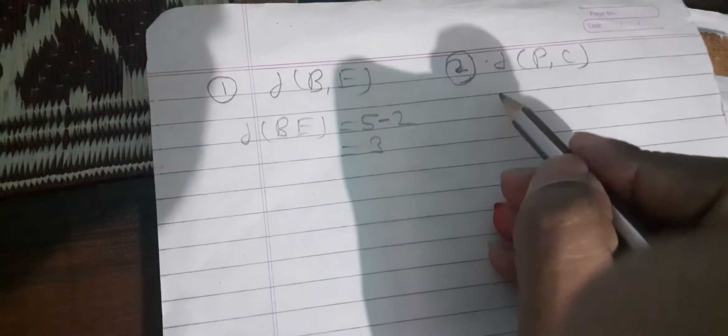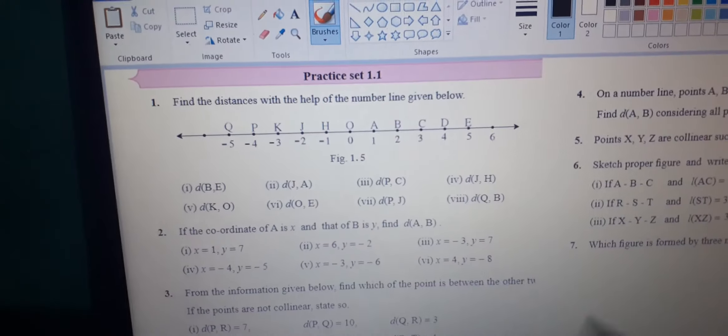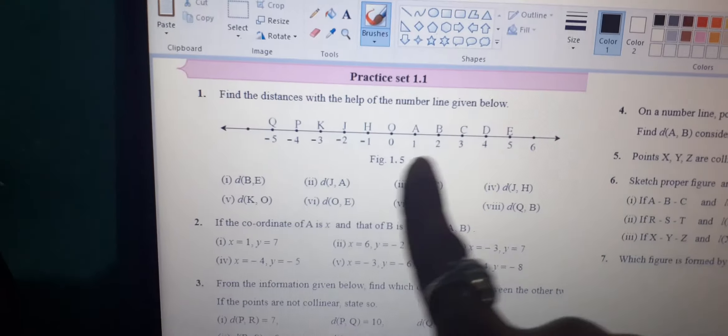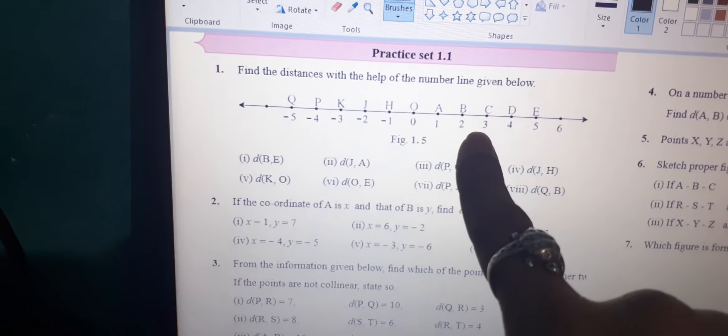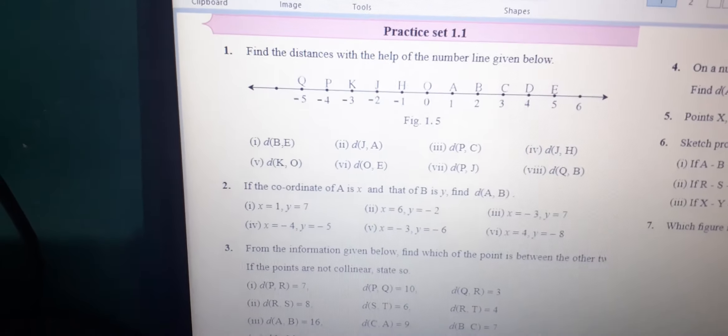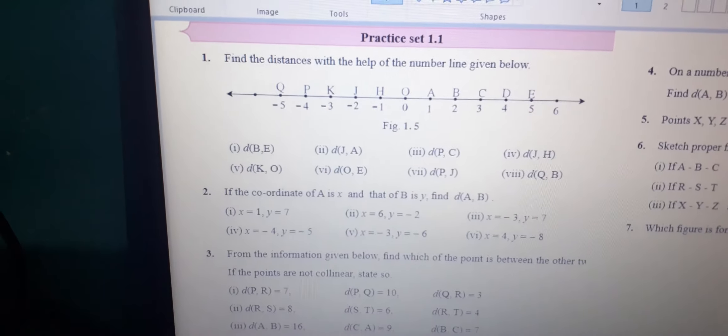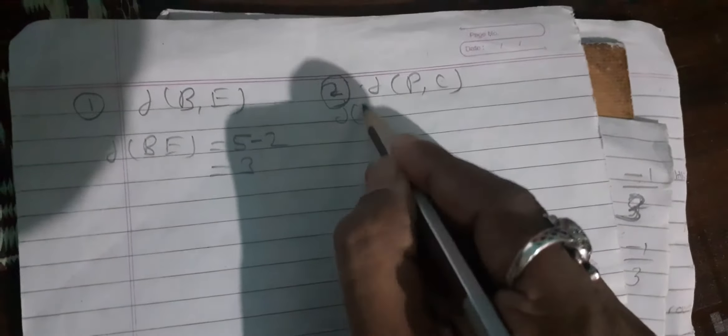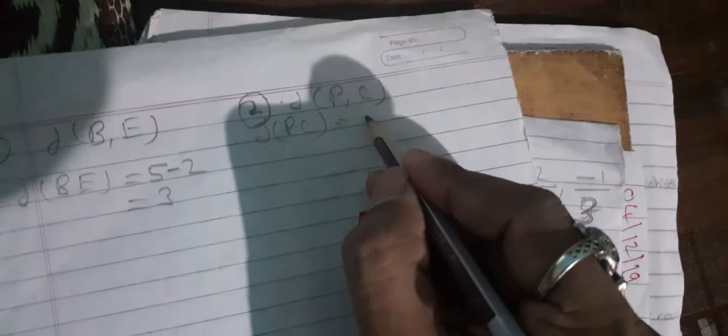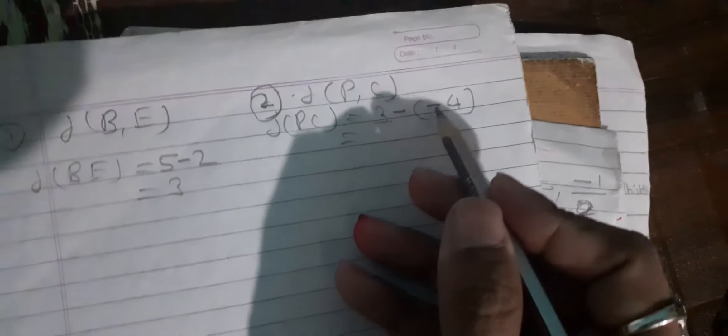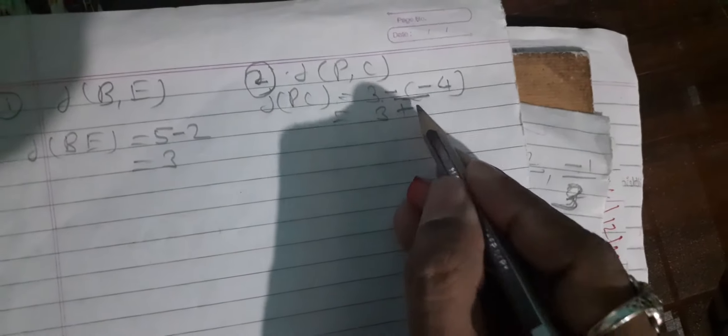Now the distance PC. Distance PC, how much is P? Minus 4. And C? 3. Minus 4 and 3. Which is bigger? How do you write this? Distance PC is equal to 3 minus minus 4. 3 minus minus 4 equals 3 plus 4. The answer is 7.